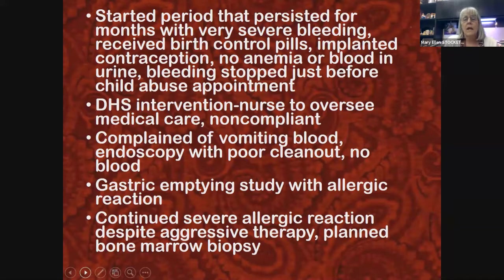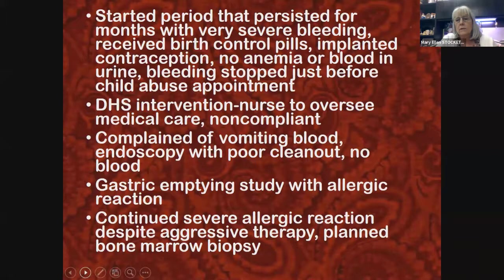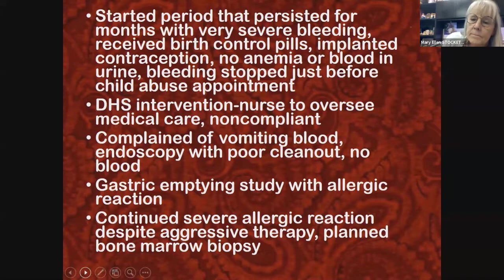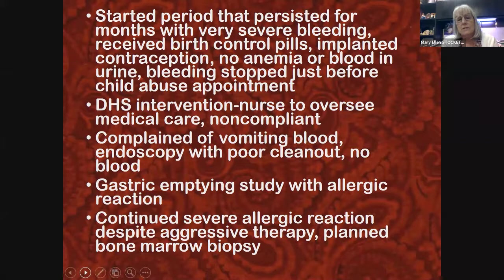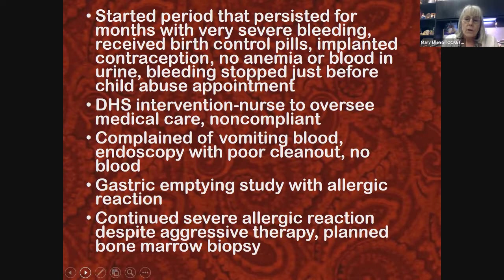All of these things occurred before I knew anything about this child. Then she started her period and had persistent bleeding for months. She was eventually seen at the adolescent clinic at OU, and they asked me to review her records. She had received a lot of care for the persistent bleeding — she'd been on birth control pills, eventually got a subdermal implant, and had multiple emergency department visits.